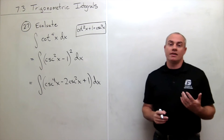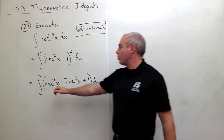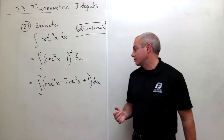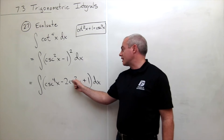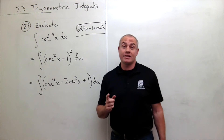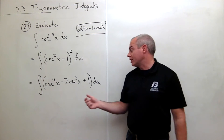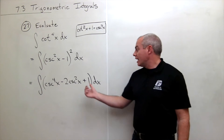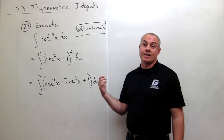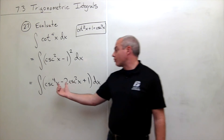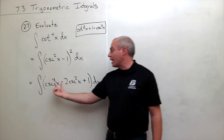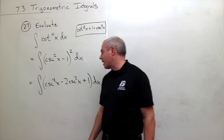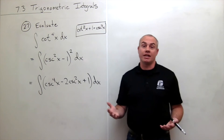So now let's look at where we are. I've got cosecant to the fourth of x — I don't really know the antiderivative of that. I've got negative two cosecant squared of x — I do know the antiderivative of that, because the antiderivative of negative cosecant squared of x is cotangent of x. And the antiderivative of one is x. So I know this and this, but I don't know cosecant to the fourth. Let's work a little harder with that and leave the others alone.